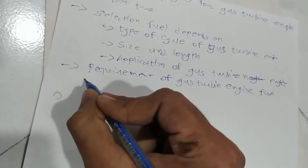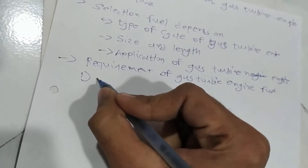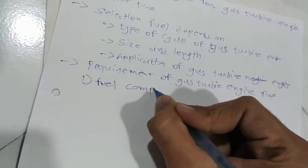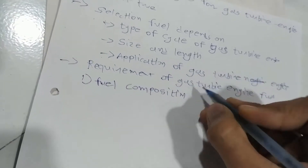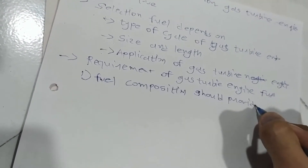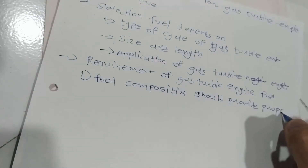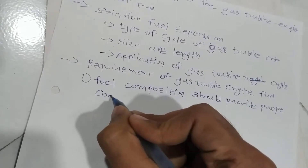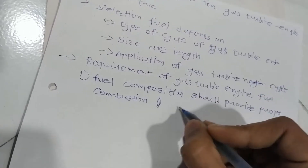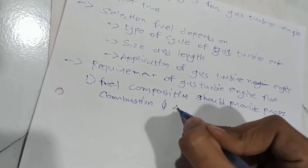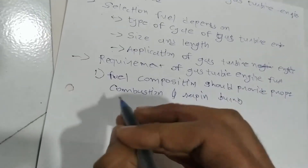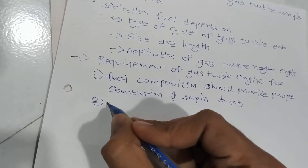The first thing we have to consider is fuel composition. The fuel should provide proper combustion — it should be able to burn rapidly. The second thing we have to understand is the mixture, or rather the product of combustion.